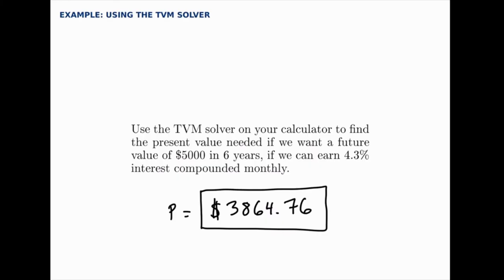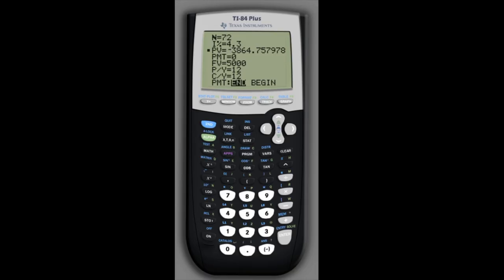If instead we wanted to solve for, let's say, future value, we could enter a present value and then use the solve option on the future value. For instance, if we wanted to deposit $2,000 today, let's say, we could go to the future value and use alpha solve.